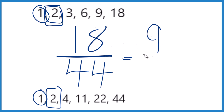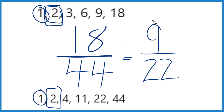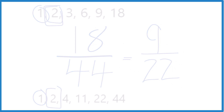Divide 18 by 2, you get 9. Divide 44 by 2, you get 22, and we can't simplify this any further — it's in lowest terms. So when we simplify the fraction 18/44, we get 9/22, and we can't reduce that any further. These are equivalent fractions with the same value; 9/22 is in lowest terms. This is Dr. B, thanks for watching.